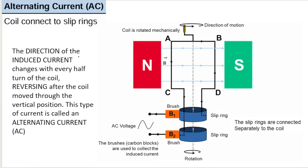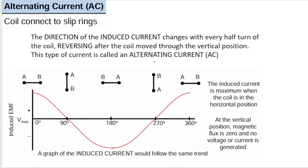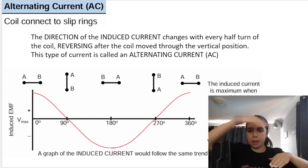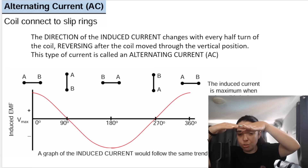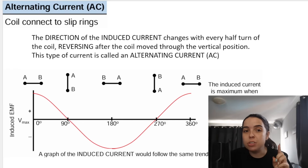Here you can see an example of an AC generator — the same generator shown earlier, with an external circuit containing a resistor and voltmeter. The direction of the induced current changes with every half turn of the coil, reversing after the coil has moved through the vertical position. This type of current is called alternating current. When the coil rotates, the magnetic field lines are going across — the coil is either going to be flat, allowing all the magnetic field lines to pass through it, or cutting through all of the magnetic field lines.